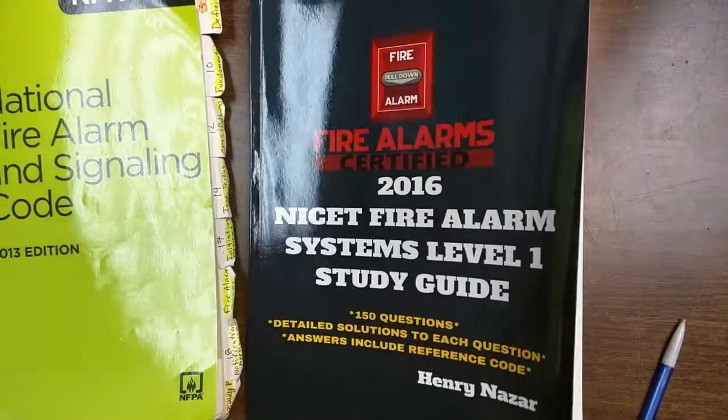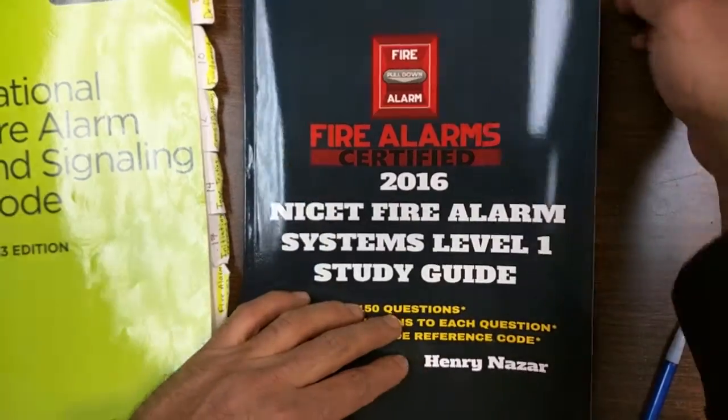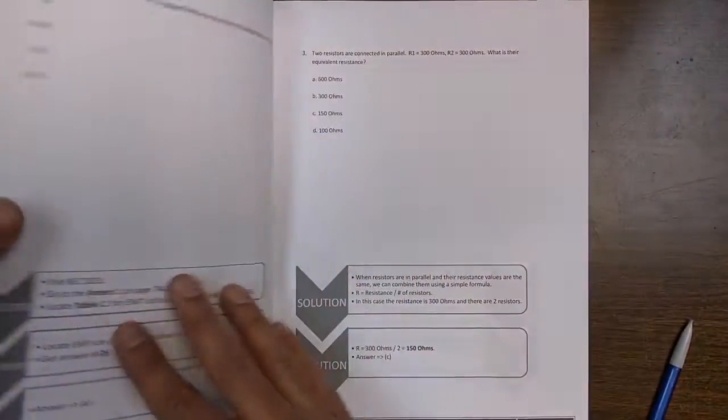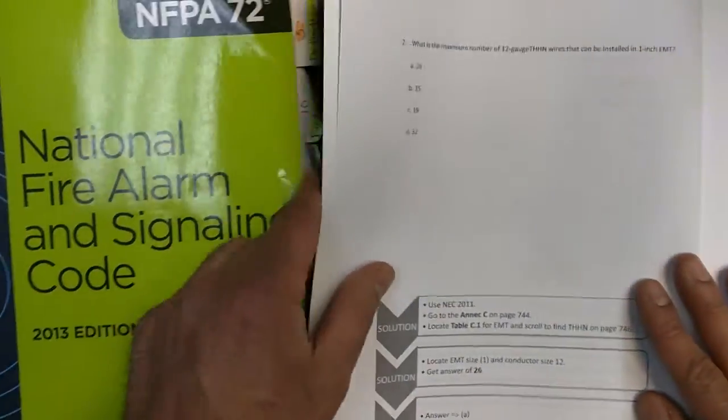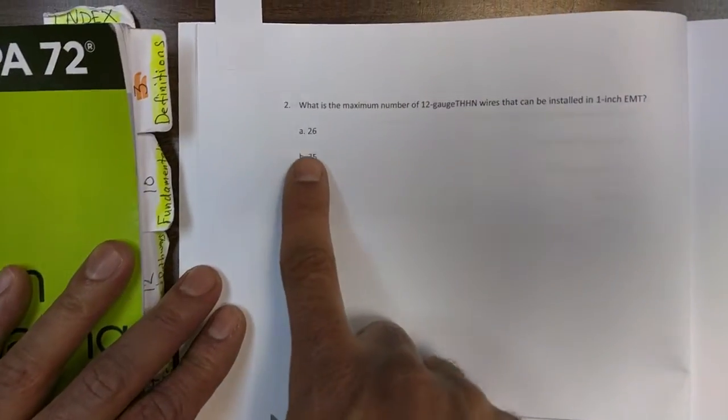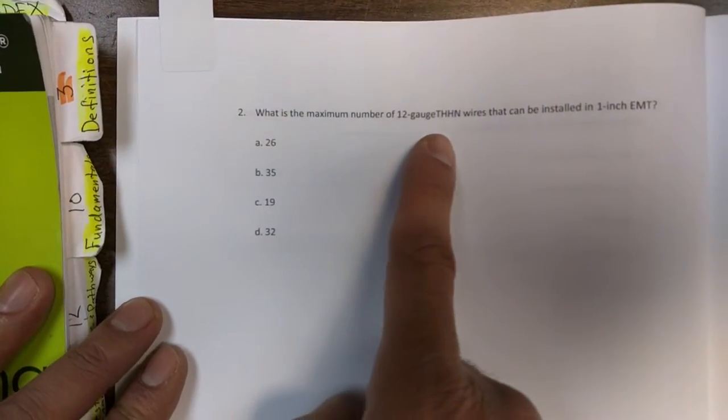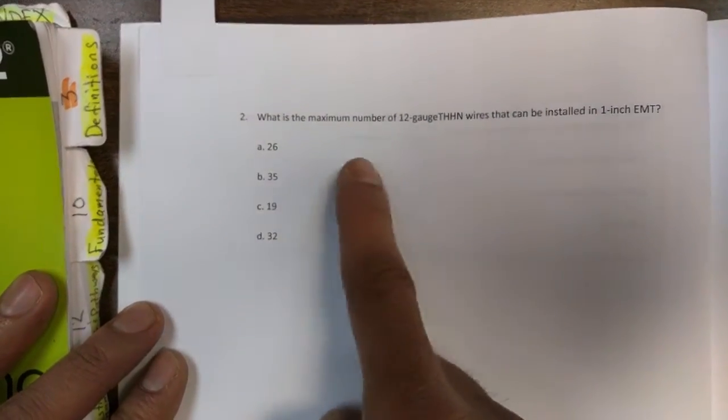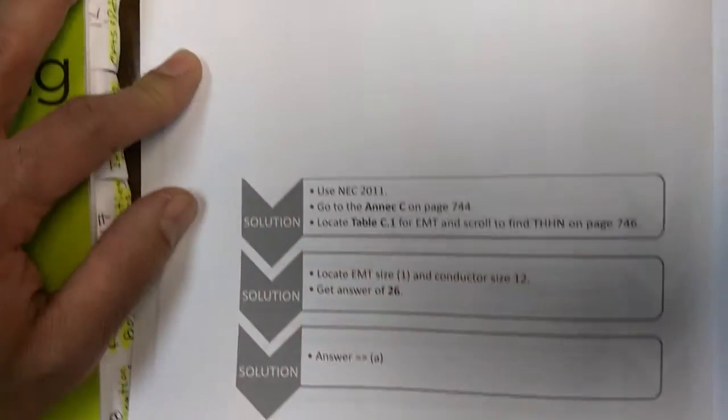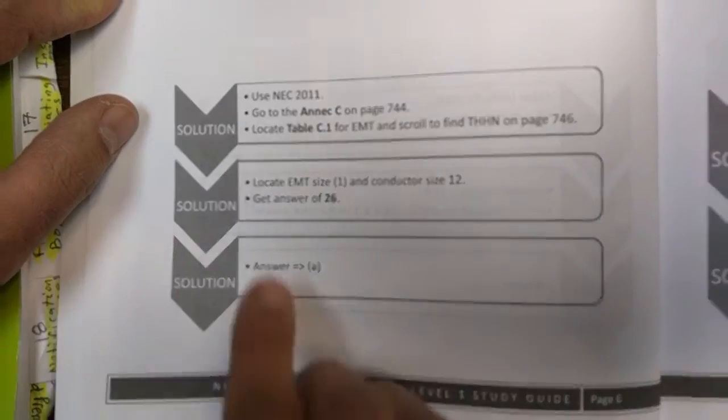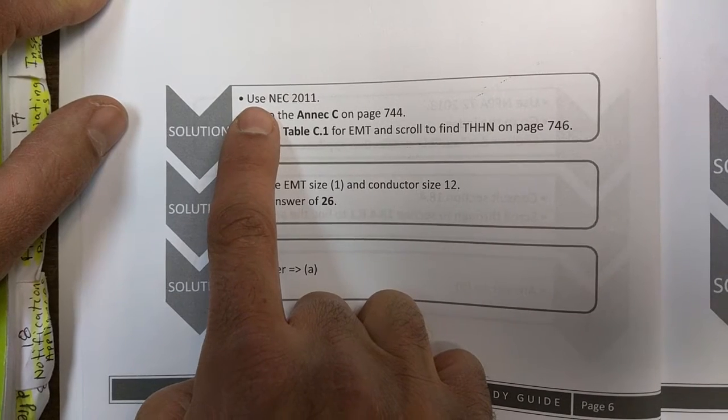So this is where this guide comes along. This guide goes into detail as to how to arrive at that answer. For example, here, what is the maximum number of 12-gauge THHN wires that can be installed in 1-inch EMT? Instead of just showing you the answer, this shows you how to go about getting the answer.